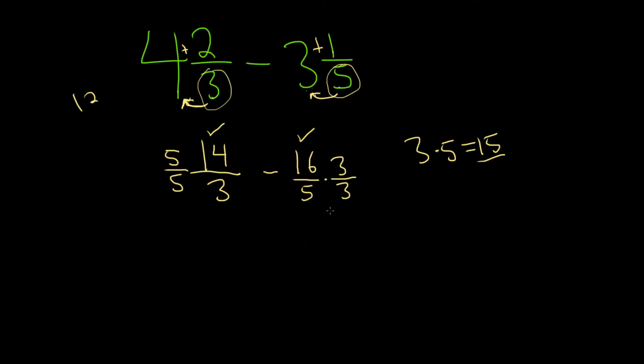All right, 5 times 14, that's going to be 70. That's because 5 times 10 is 50, 5 times 4 is 20, 50 plus 20 is 70. And then 5 times 3 is 15.